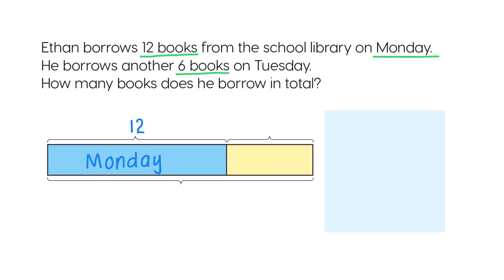He borrows 6 books on Tuesday. Write 6 here and label this part of the bar model as Tuesday.